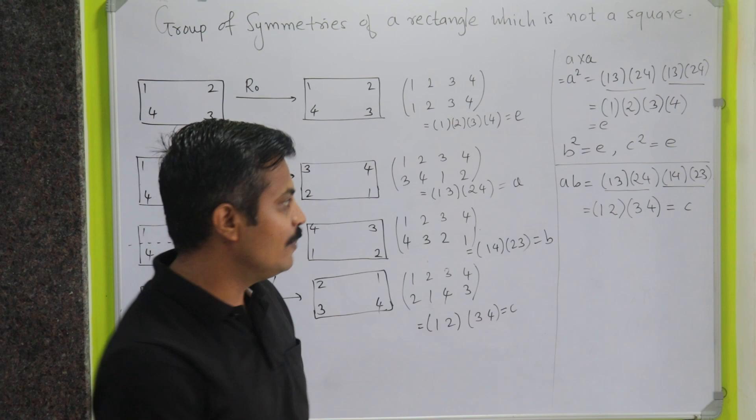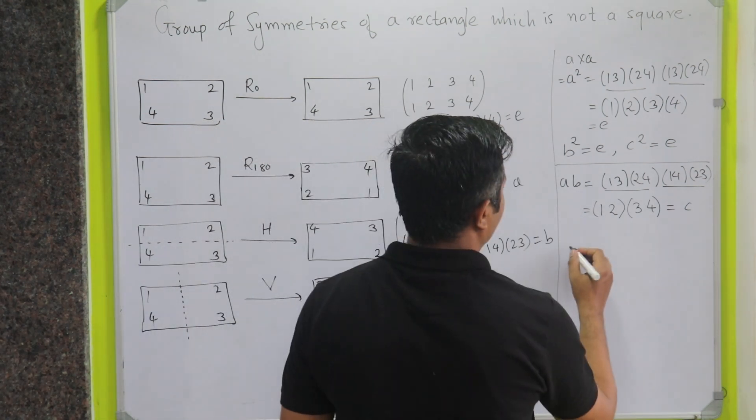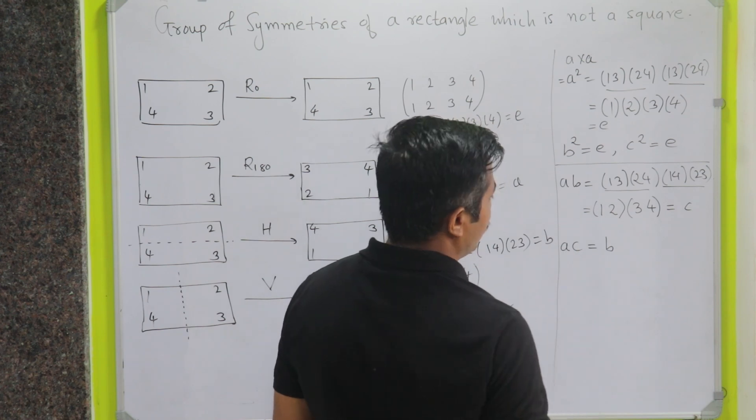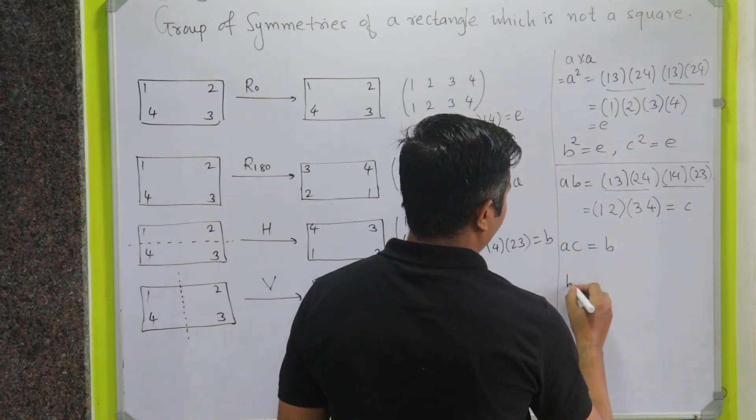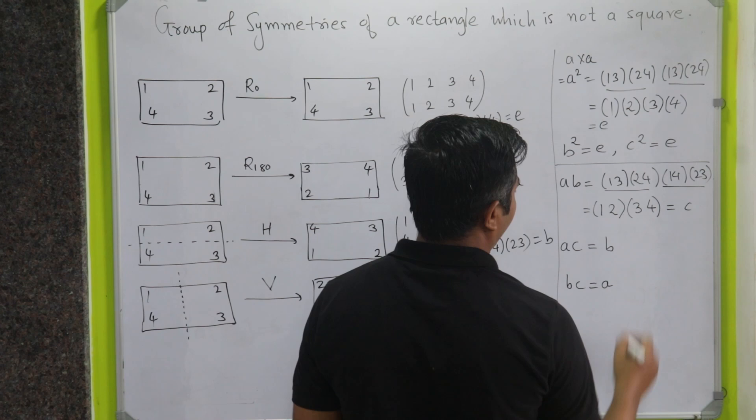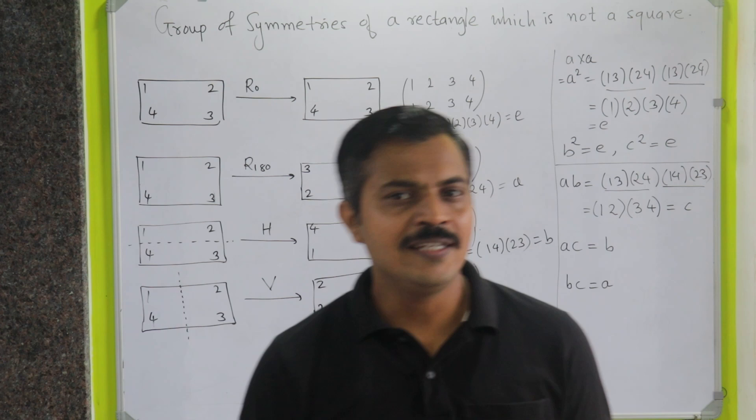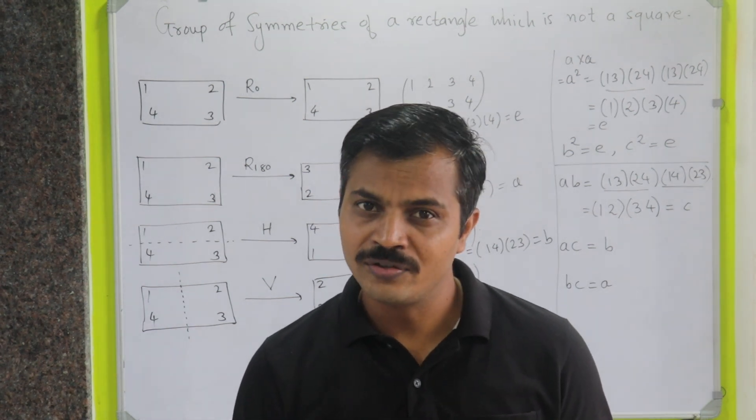By doing exactly similar calculations, one can check that the multiplication of AC comes out to be B and the multiplication of BC comes out to be A. So such type of group, we have already seen before. Can you relate to that group?